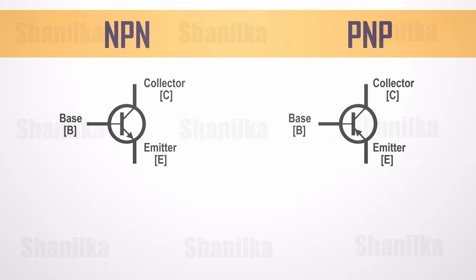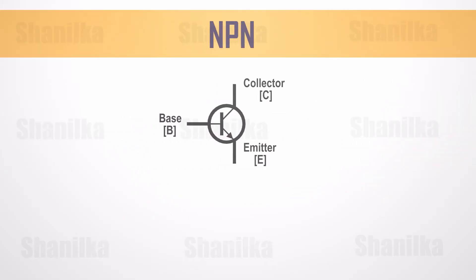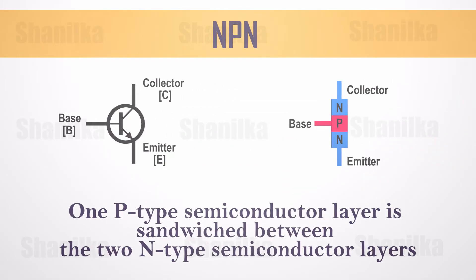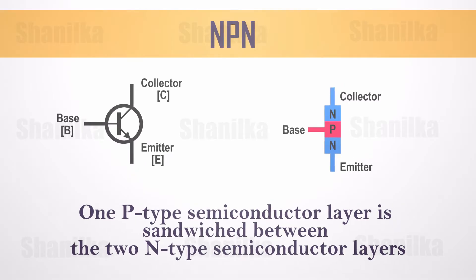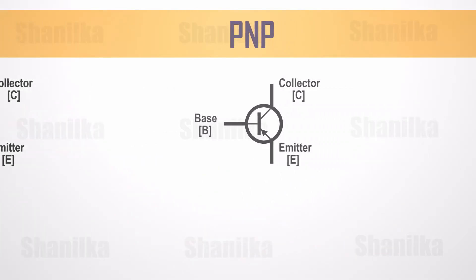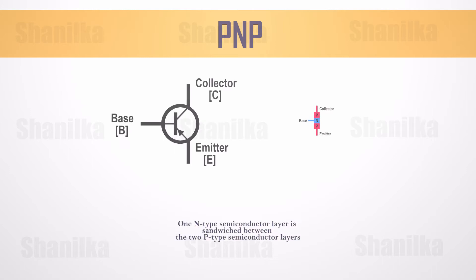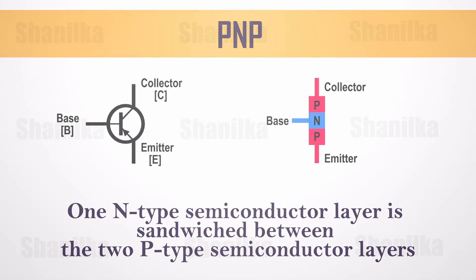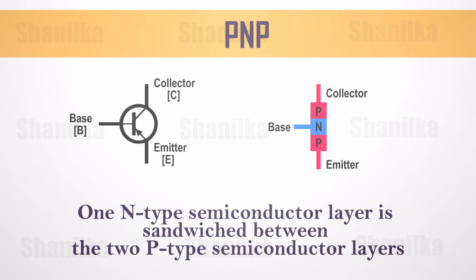In NPN transistors, one P-type semiconductor layer is sandwiched between the two N-type semiconductor layers. In PNP transistors, one N-type semiconductor layer is sandwiched between the two P-type semiconductor layers.